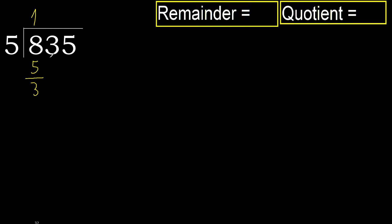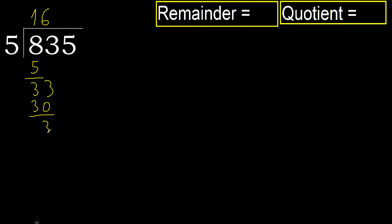Subtract. Next: 33. 5 multiplied by 7 is greater, so multiply by 6. 5 multiplied by 6 is 30 — 30 is not greater, ok. Subtract.